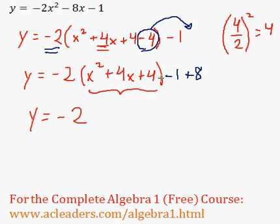And x squared plus 4x plus 4 will factor into x plus 2 squared. And negative 1 plus 8 is just 7.